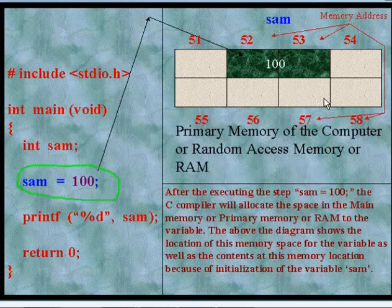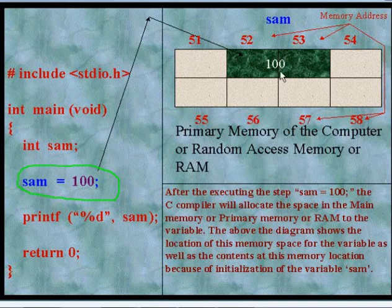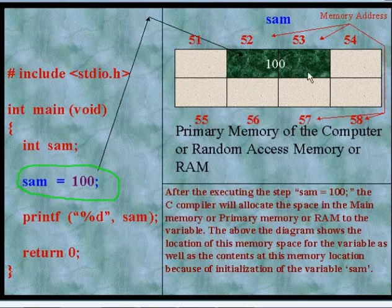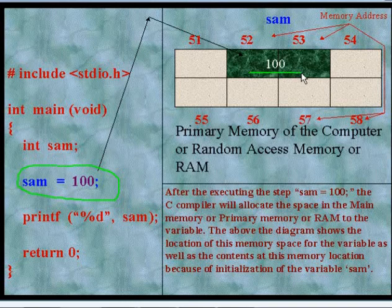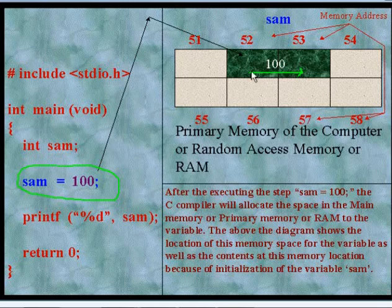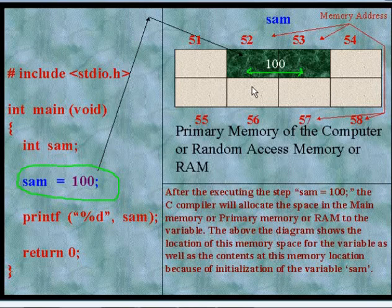This address specifies the memory location. Now our variable sam consumes two bytes. I have shown this by using green color. There are two bytes for variable sam. The bytes whose addresses are 52 and 53 are allocated for variable sam. These two bytes contain the integer constant 100. I have shown it over here.